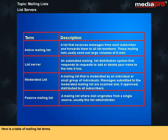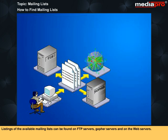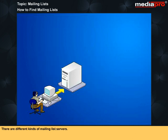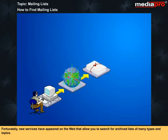Here is a table of mailing list terms. Listings of the available mailing lists can be found on FTP servers, gopher servers, and on web servers. There are different kinds of mailing list servers. Fortunately, new services have appeared on the web that allow you to search for archived lists of many types and topics.